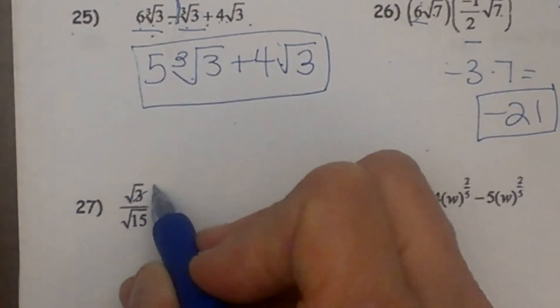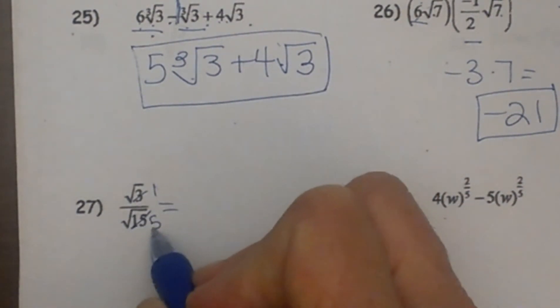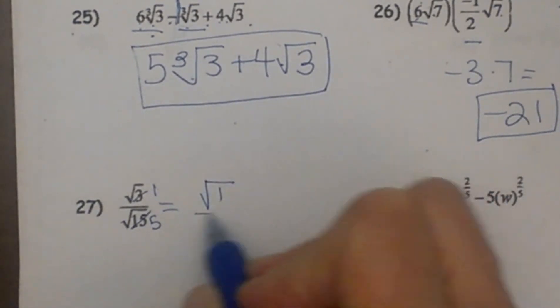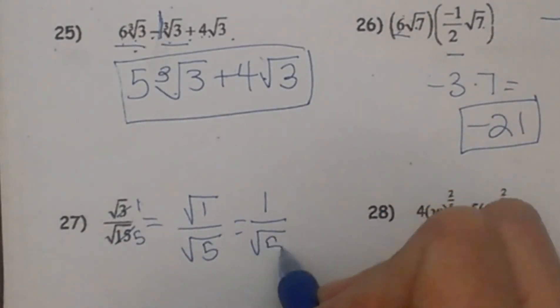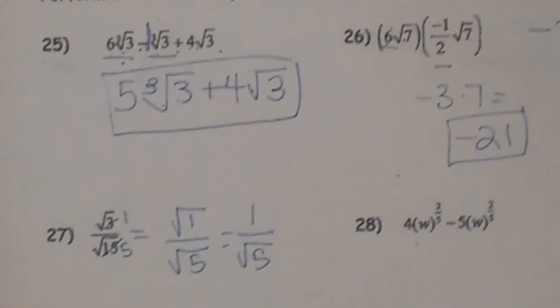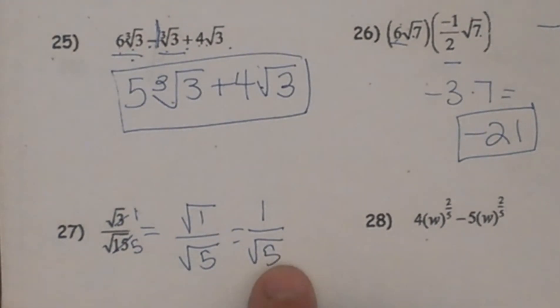Well I can take a 3 out of here and get a 1, and take a 3 out of here and get a 5. So I am going to have the square root of 1 over the square root of 5. Well we know the square root of 1 is perfect, so it is just 1 over the square root of 5. Now you would think you would be done, but you are not, because you cannot leave a radical in the denominator.